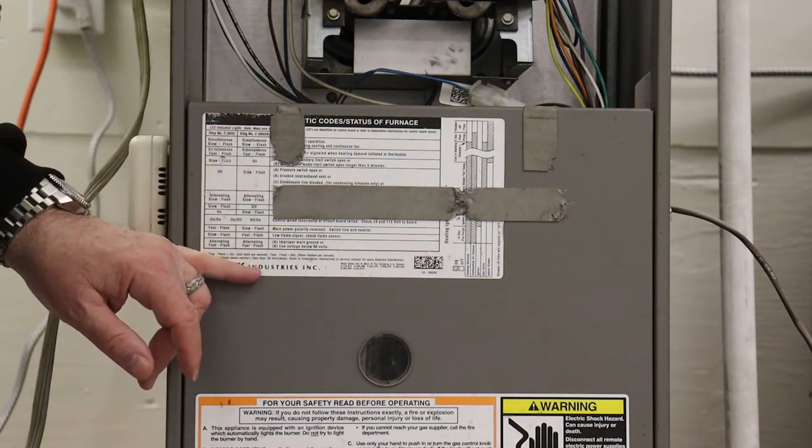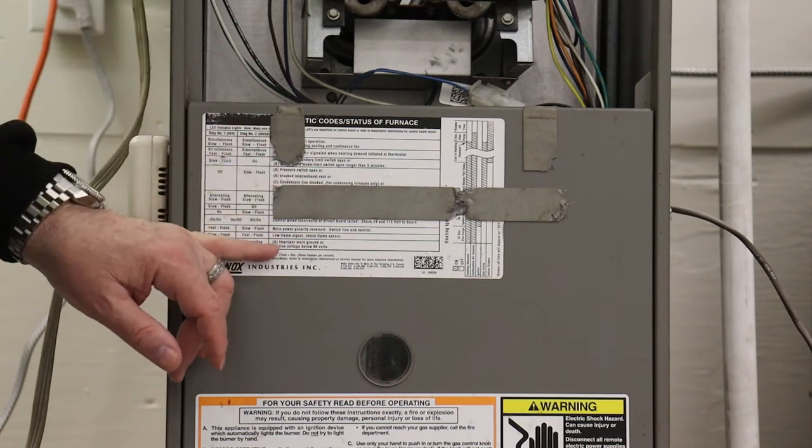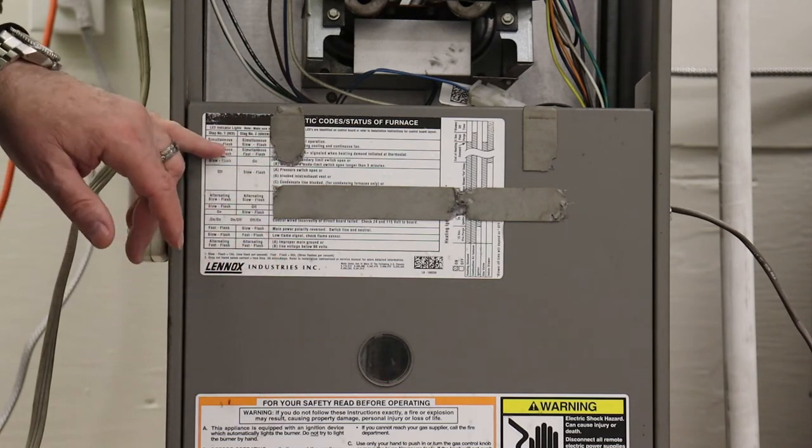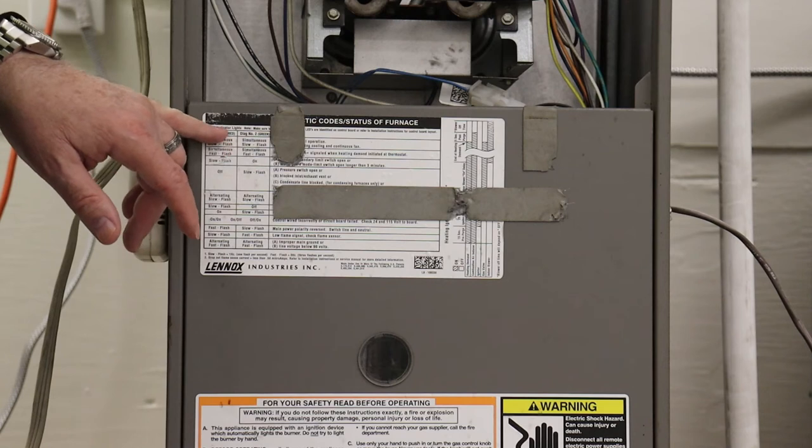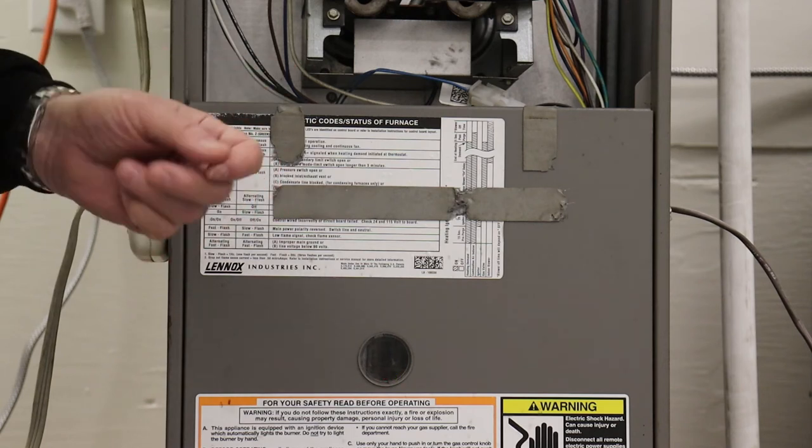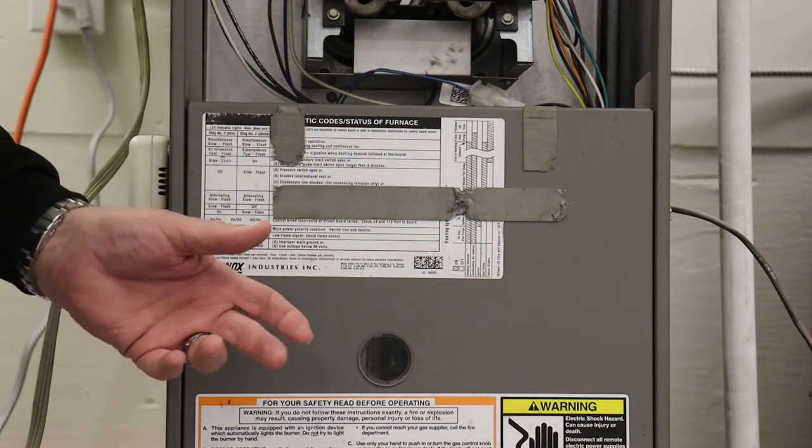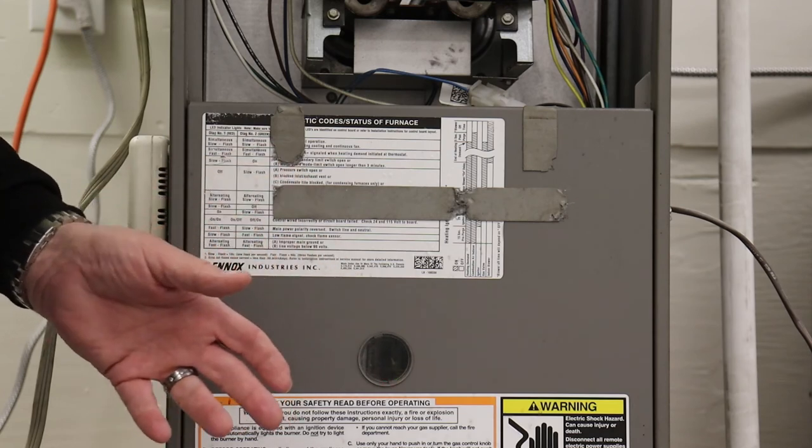The fault code chart is usually stuck to the inside or outside of the door. In this particular Lennox furnace, it's on the outside, so it's easy to see if the LED is flashing and what codes it's flashing, so you can see what's wrong with the furnace before you take the door off.